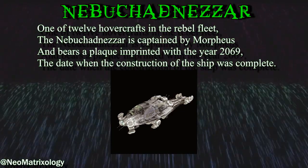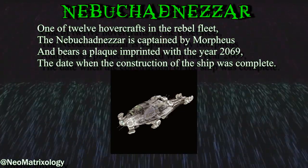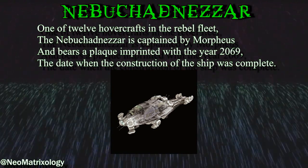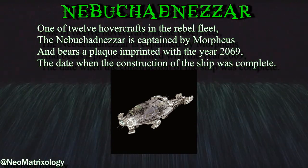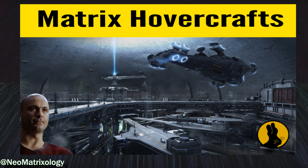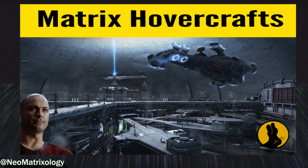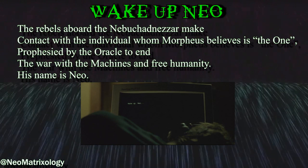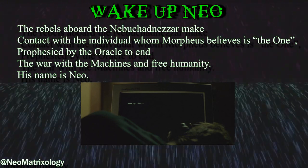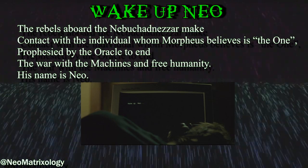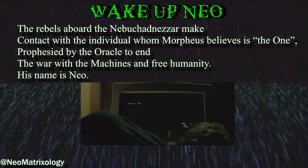Nebuchadnezzar — one of 12 hovercrafts in the rebel fleet. The Nebuchadnezzar is captained by Morpheus and bears a plaque imprinted with the year 2069, the date when the construction of the ship was complete. In the Matrix hovercraft crew video featuring Captain Soren, I already identified and named all 12 of the ships included in the Zion fleet as well as each ship's captain. Wake up Neo — the rebels aboard the Nebuchadnezzar make contact with the individual whom Morpheus believes is the One, prophesized by the Oracle to end the war with the machines and free humanity. His name is Neo.